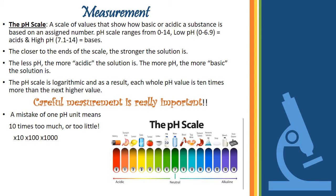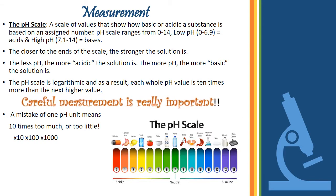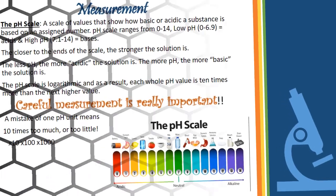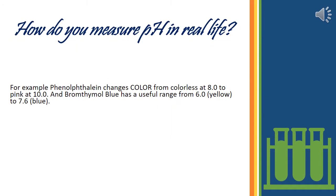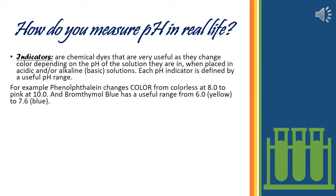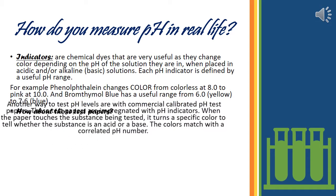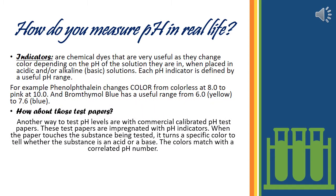We have to be very careful with measurements because a mistake of 1 unit means a 10-times difference. How to measure pH in real life? By indicators — chemical dyes that change color depending upon the solution they are in — like phenolphthalein, bromothymol blue, methyl orange, and so on. There is also an alternate method using pH test papers, which produce a specific color that is correlated with a pH chart to assign its pH value.